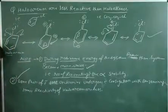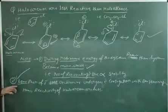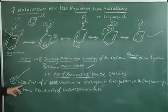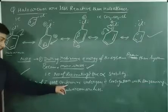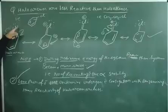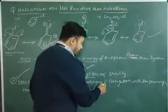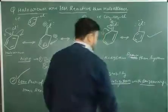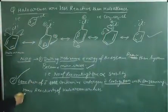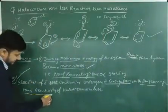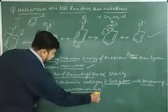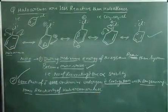Now, at the end of the lecture, the last point for that, the lone pair of the electron present on the chlorine, the lone pair of electron present on the chlorine is undergo for the electronic conjugation with the benzene ring. That means to say, hence, there is, the reactivity of the haloarenes are very less. I hope you understand this lecture. Thank you.